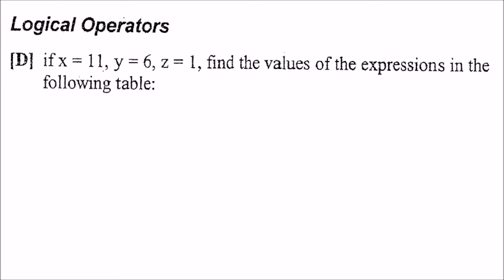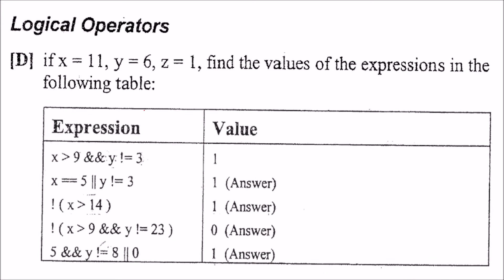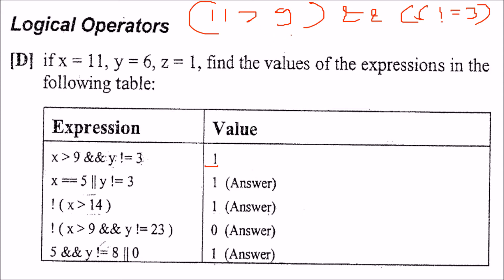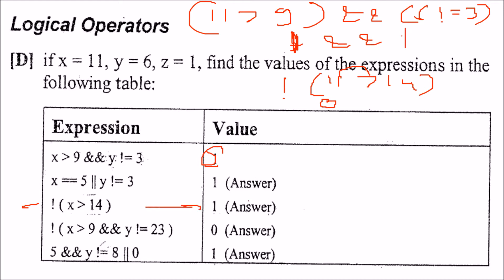Logical operators: x equals 11, y equals 6, z equals 1. Find the values. x greater than 9 AND y not equal to 3: 11 > 9 is true (1), and 6 ≠ 3 is true (1). AND of two trues gives 1. Another example: NOT (x > 14) — 11 > 14 is false (0), so NOT 0 gives 1.